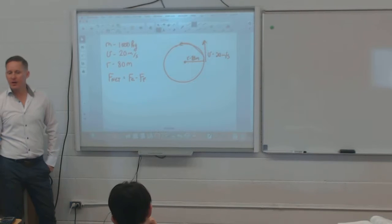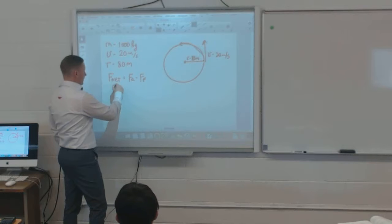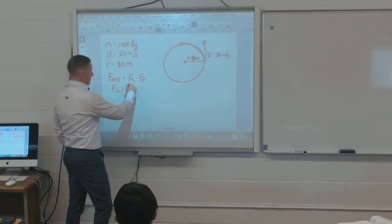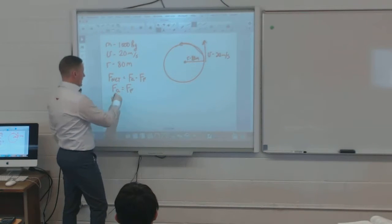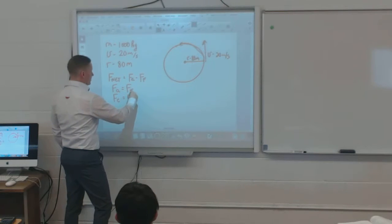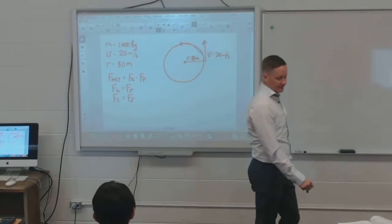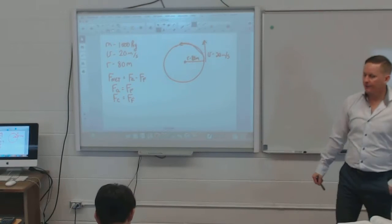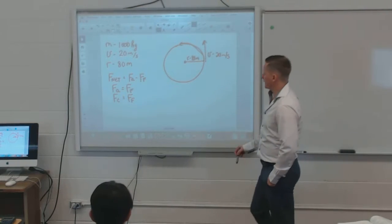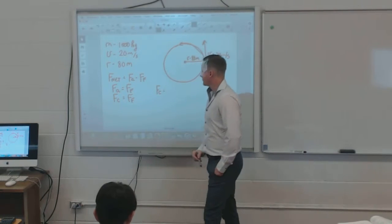Because it's moving at constant velocity, the net force is zero. Therefore, the force applied equals the force of friction. In this case, I'm going to call my force applied the centripetal force, so it must equal the force of friction. If I can find the centripetal force, I can find the force of friction.